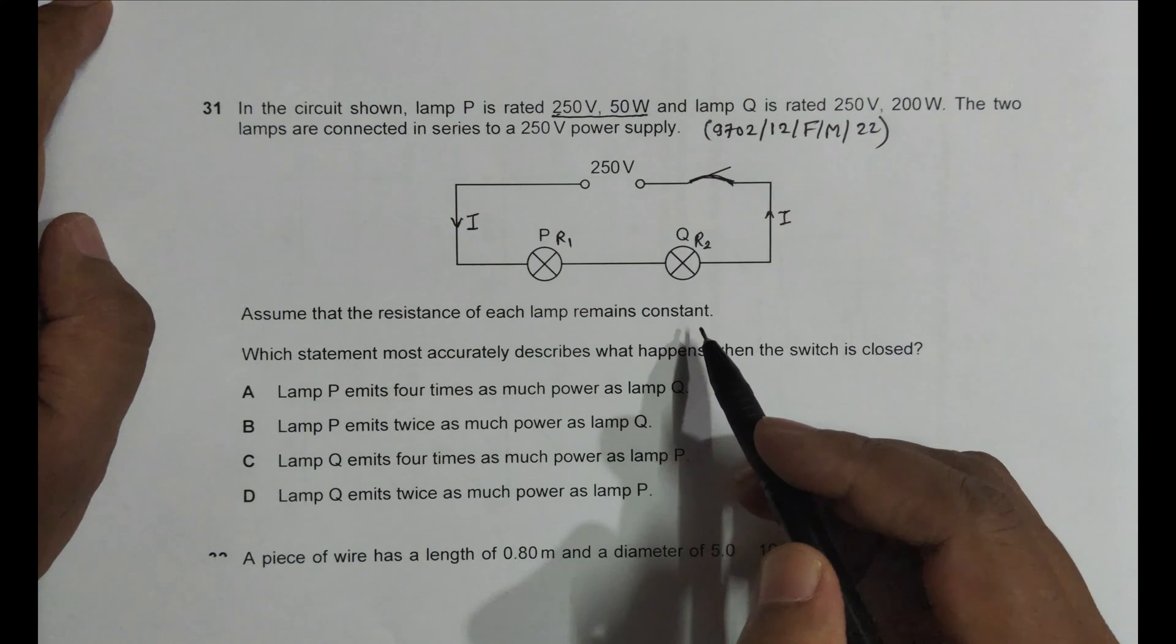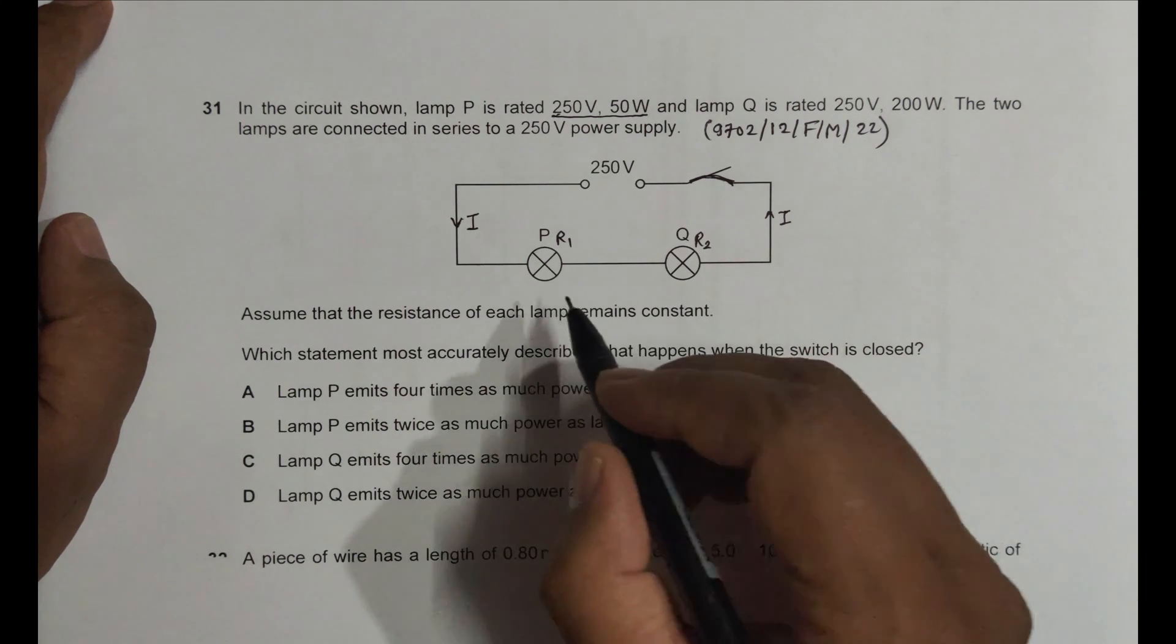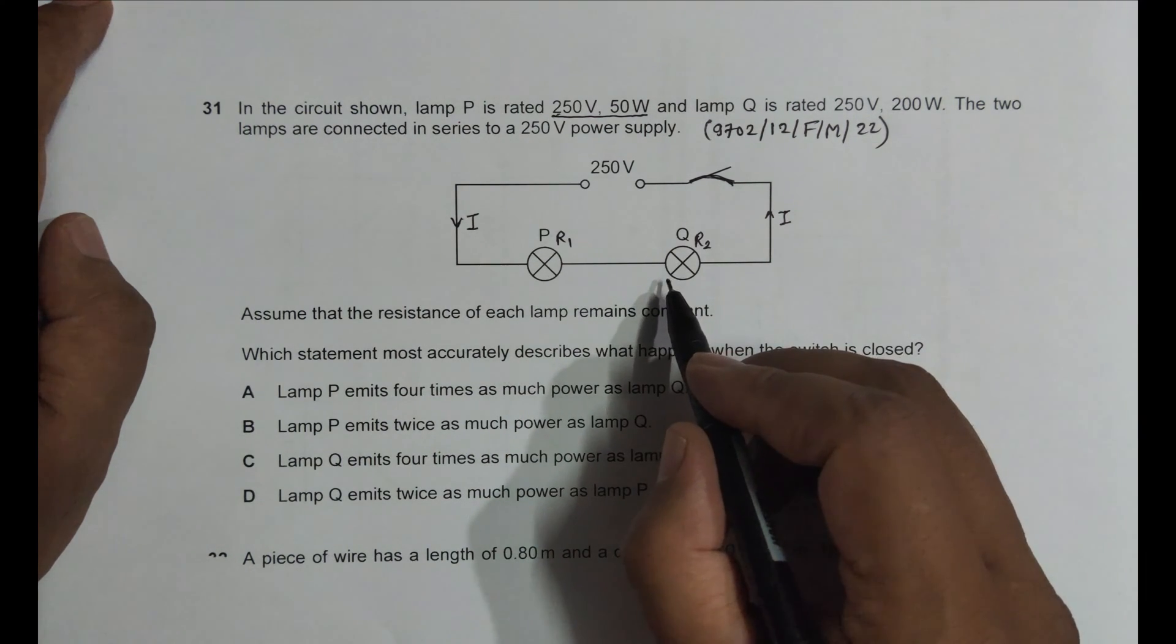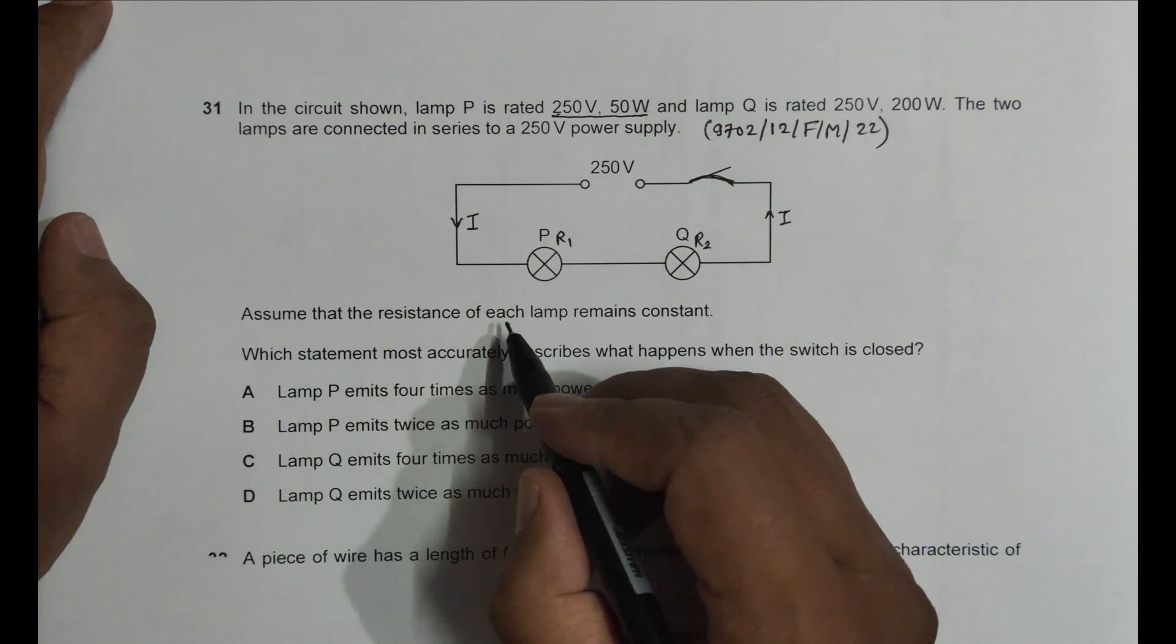This thing is essential to mention because when the circuit is operated, as current flows, the temperature might increase and this will change the resistance of the filament lamp. So what it tells us is to neglect that factor and take it as constant.